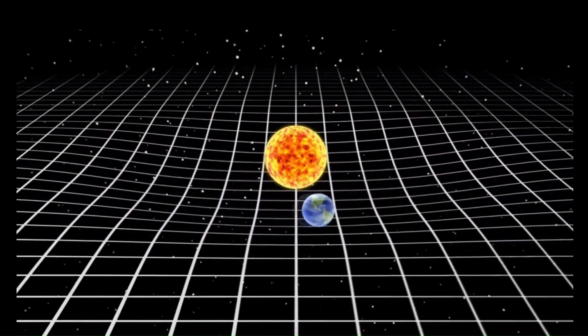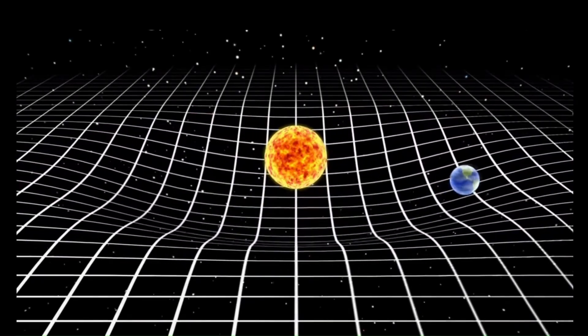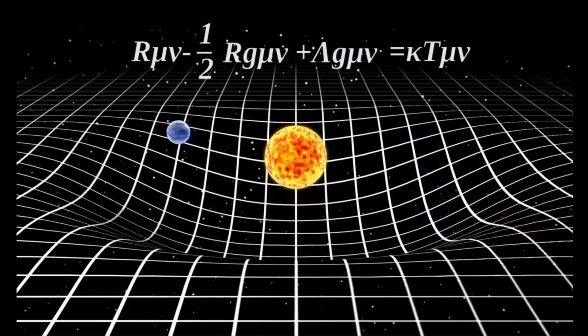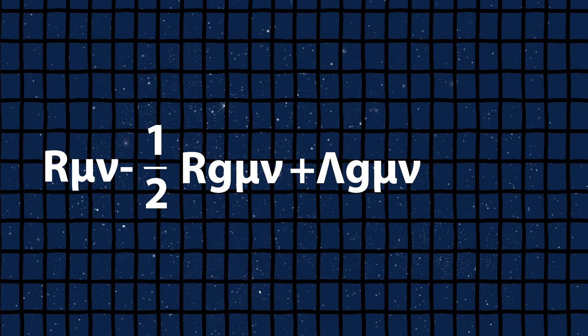This curvature causes objects to follow curved paths, like planets orbiting the sun, where R mu nu is the Ricci curvature tensor, R is the Ricci scalar curvature, G mu nu is the metric tensor, T mu nu is the stress-energy tensor, and kappa is Einstein's gravitational constant.